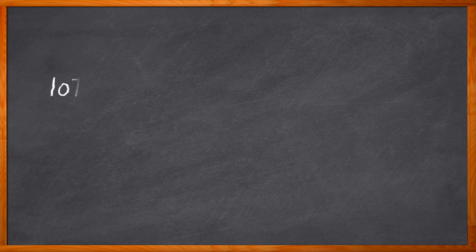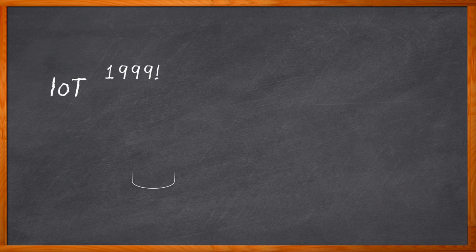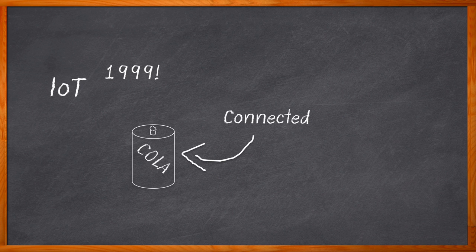Did you know that the term IoT was first coined way back in 1999? Even before that, the first documented use of a network-connected device was a soda machine in the 1980s. Now IoT is so commonplace that it's made its way out of the realm of consumer electronics and into the world of industrial machines, encouraging a new revolution — Industry 4.0 has completely changed how the world works.